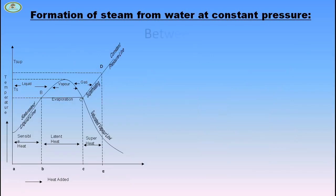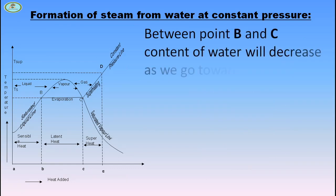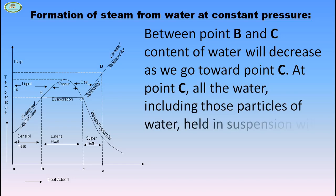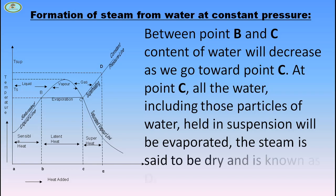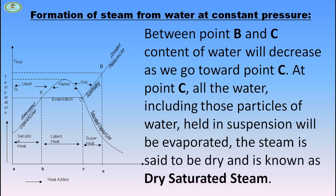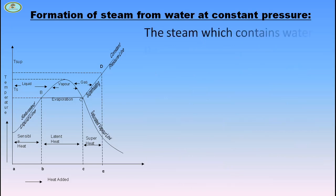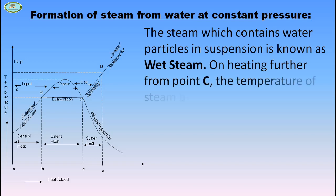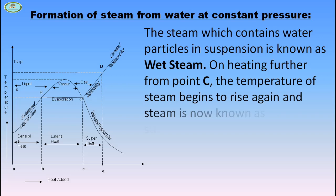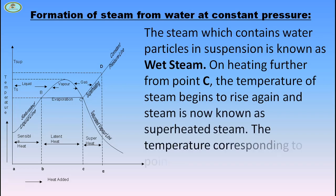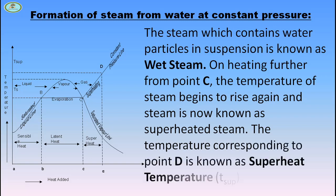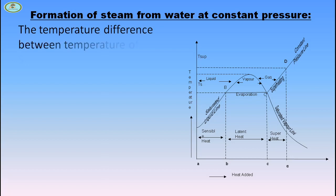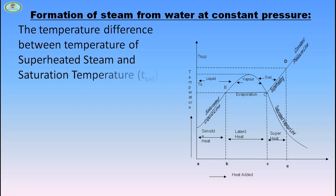Between points B and C, the water content decreases as we move towards point C. At point C, all the water including particles of water held in suspension will be evaporated — the steam is said to be dry and is known as dry saturated steam. The steam which contains water particles in suspension is known as wet steam. On heating further from point C, the temperature of steam begins to rise again and the steam is now known as superheated steam. The temperature corresponding to point D is known as the superheat temperature.